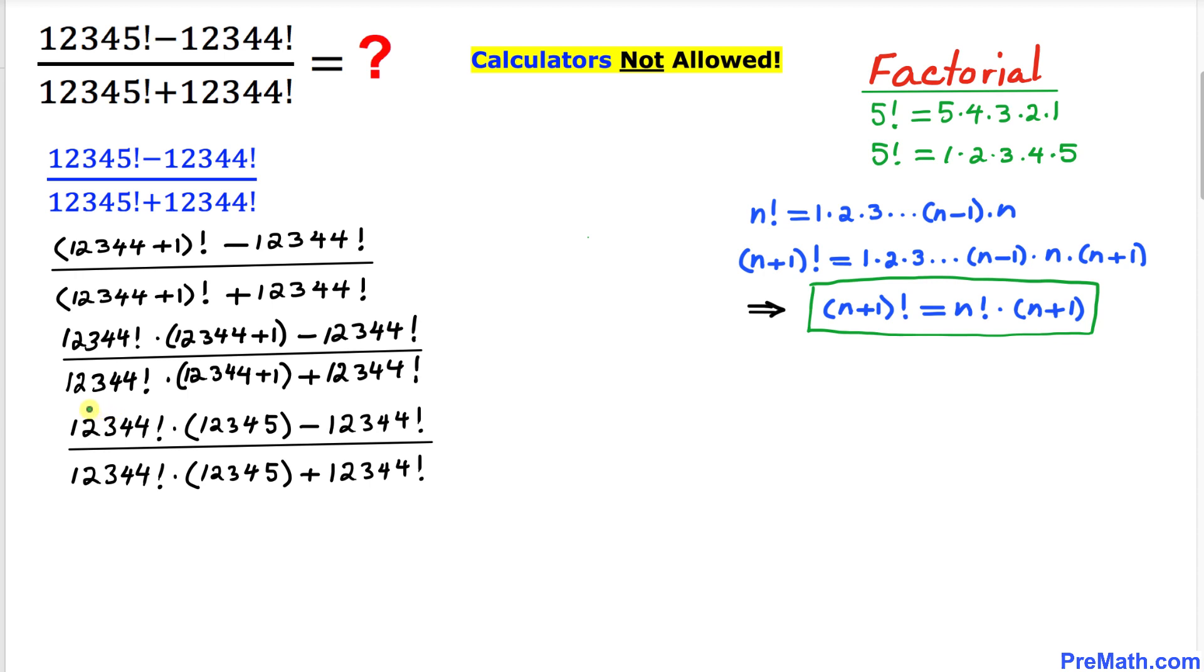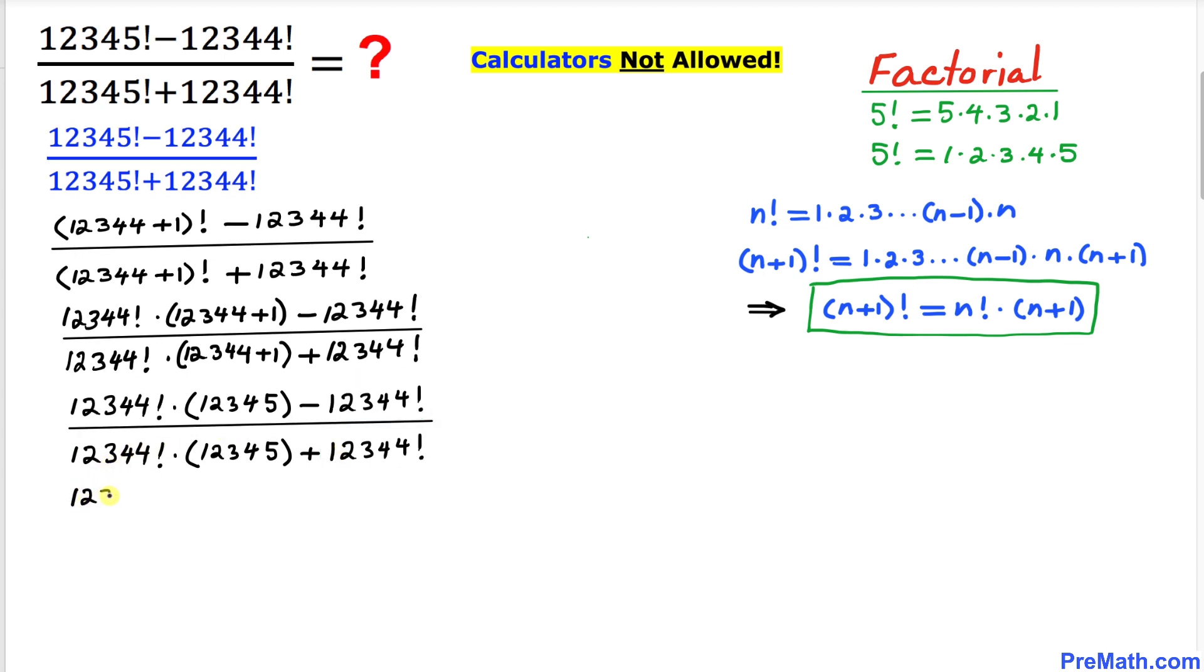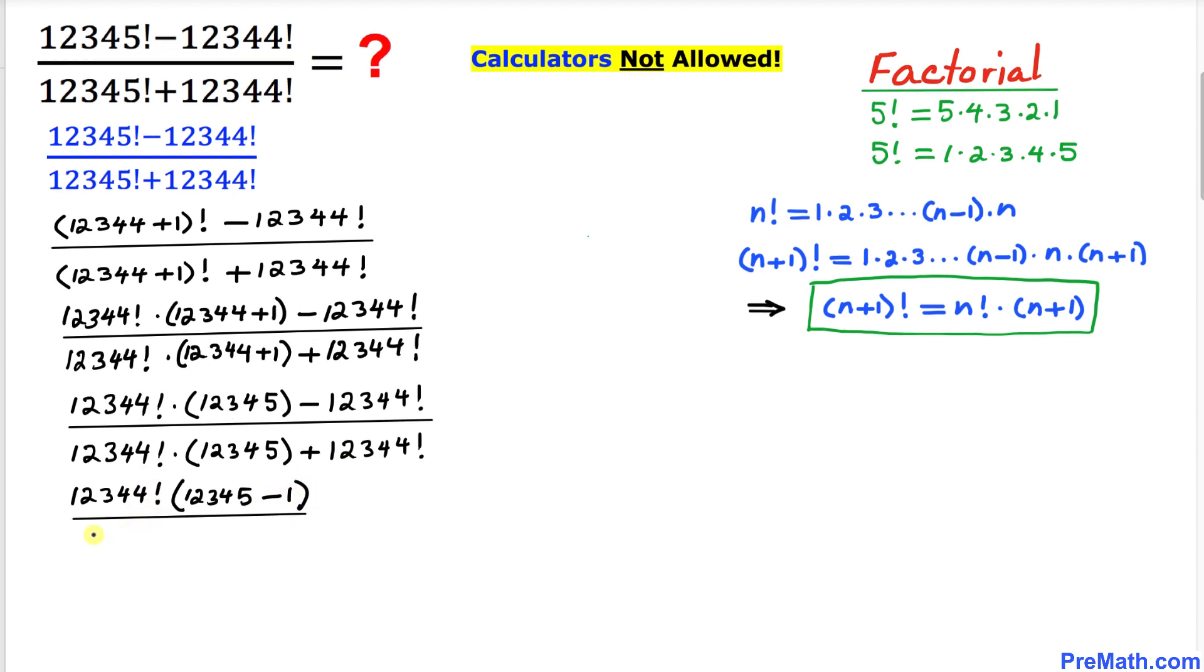Now we can see at the numerator, 12,344 factorial appears in both terms, so we can factor that out. Let's go ahead and factor them out. So 12,344 factorial is going to be outside, and in parentheses we got 12,345 minus 1. Likewise in the denominator we can factor out 12,344 factorial, and inside the parentheses is going to be 12,345 plus 1. Now we can see that this factorial is same as this one, so they cross each other out.